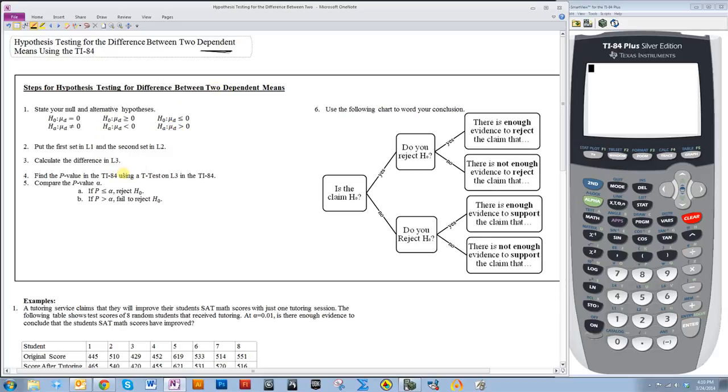Here I have the steps for hypothesis testing for the difference between two dependent means. The first thing you need to do is state your null and alternative hypotheses. When you are looking at dependent sets, you're going to use mu sub d. The mu sub d represents the difference between the two means, and it's always going to be compared to zero. So that zero will always be the number in your null and alternative hypotheses.